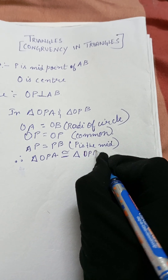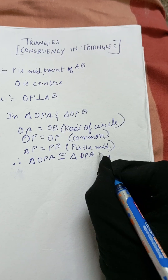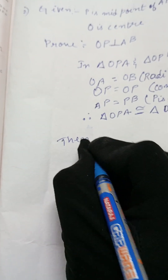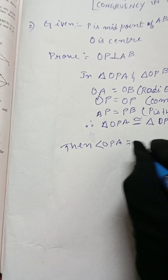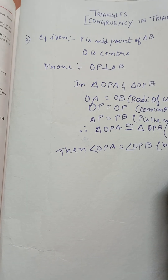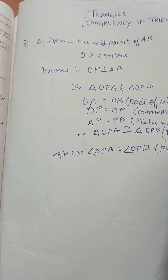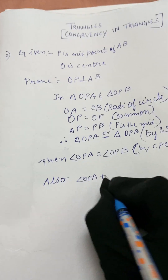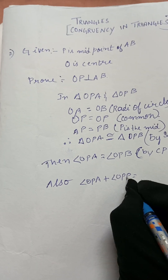The triangles are congruent by SSS congruency rule. Then we need to prove that angle OPA equals angle OPB, and angle OPA plus angle OPB equals 180 degrees, since they form a straight line.